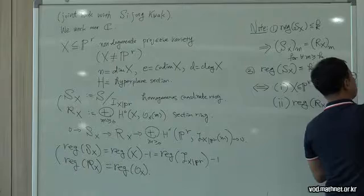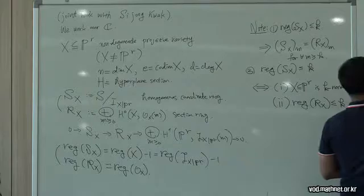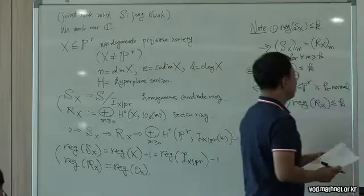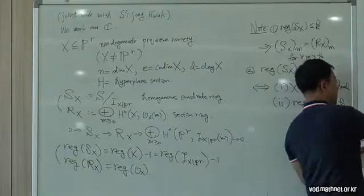There is a big conjecture — the Regularity Conjecture — due to Eisenbud and Goto. The regularity of X, which is the regularity of the homogeneous coordinate ring, is bounded by degree minus co-dimension plus 1.